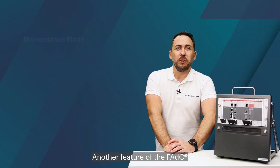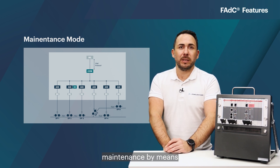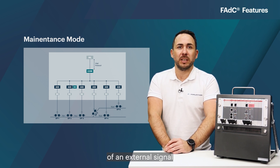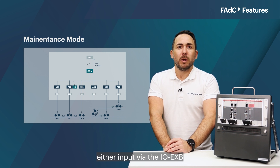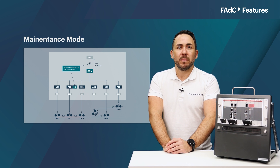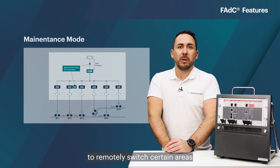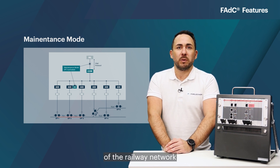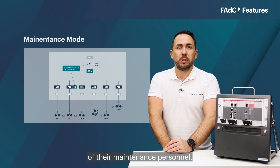Another feature of the FADC is the possibility to activate maintenance by means of an external signal, either input via the IOXB or through a failsafe Ethernet protocol like the Frausher-safe Ethernet. This feature allows the operator to remotely switch certain areas of the railway network to occupied, in order to ensure the safety of maintenance personnel.